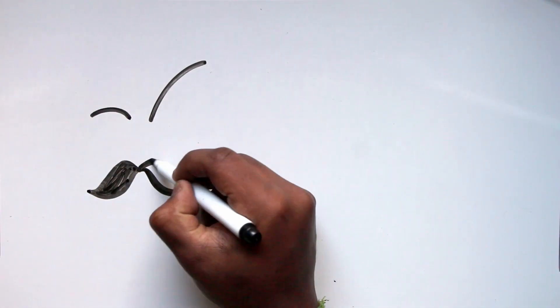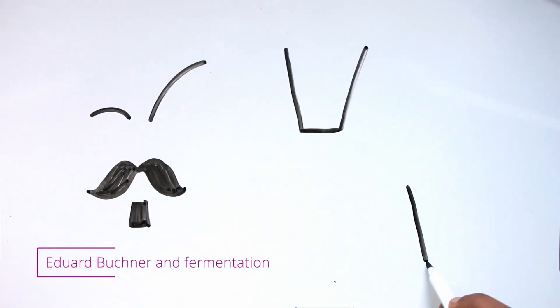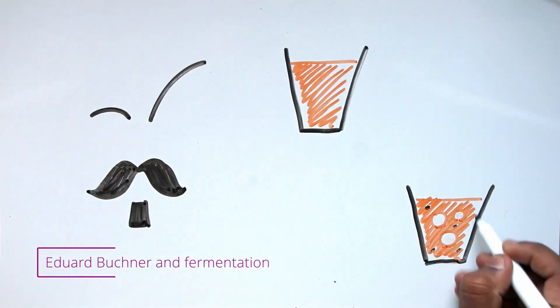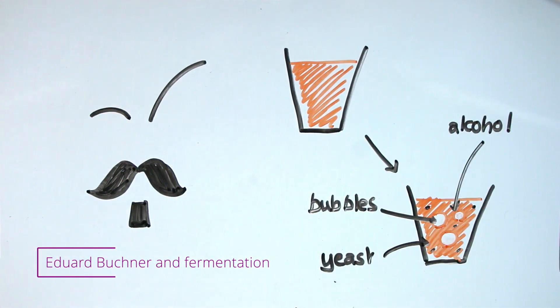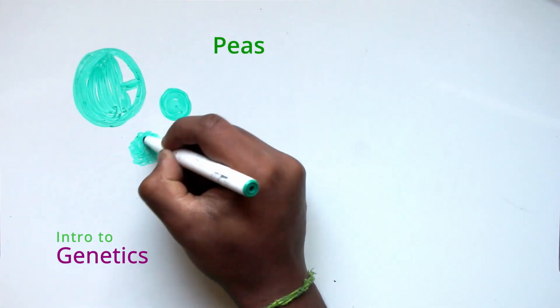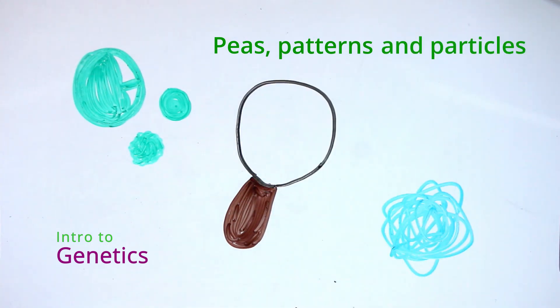In the last video, we looked at how a guy called Buchner started the field of biochemistry by investigating the fermentation performed by yeast. Today, we'll be looking at how the field of genetics began with investigating peas, finding patterns, and theorizing about particles.